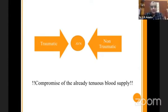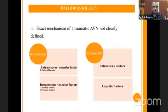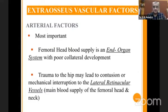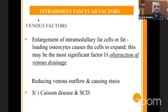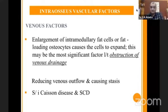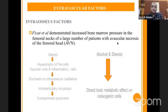As many things have been discussed by Ravi, the AVN is just a compromise of the already tenuous blood supply of the head, due to trauma or non-traumatic conditions. The basic mechanism is due to intravascular or extravascular factors. Amongst the extra-osseous vascular factors, the femoral head has an end-organ supply with poor polar lateral development, so any trauma leading to contusion or mechanical interruption of the lateral retinacular vessels leads to AVN. In the venous factors, enlargement of intramedullary fat cells or fat-loading osteocytes causes cells to expand, leading to significant obstruction in venous drainage — venous stasis as seen in Caisson's disease or sickle cell disease. Regarding intraosseous factors, FICAT demonstrated increased bone marrow pressure in the femoral neck of a large number of patients with AVN of the femoral head.